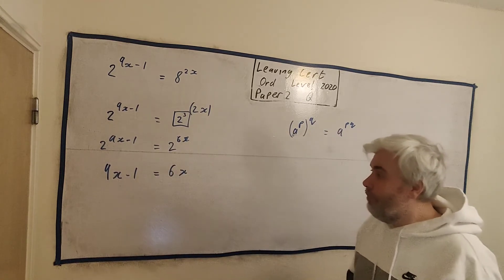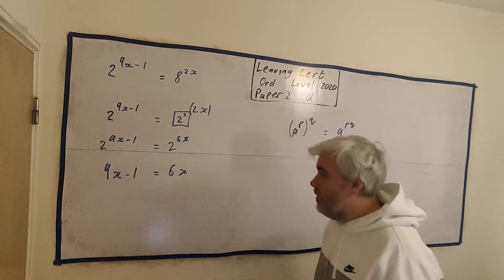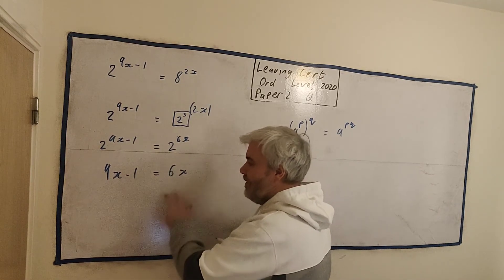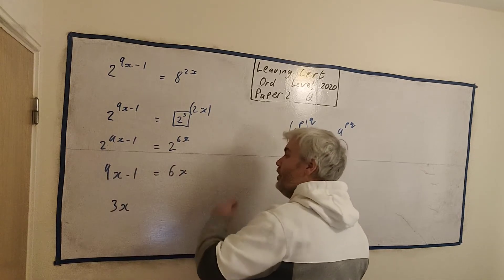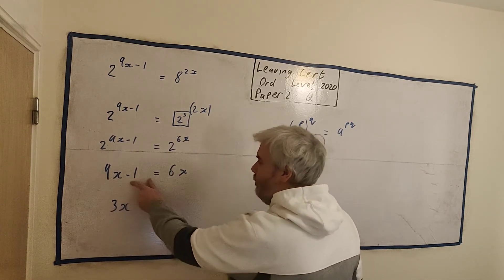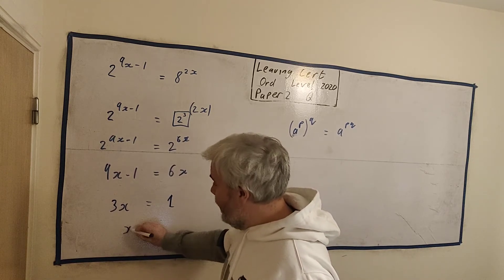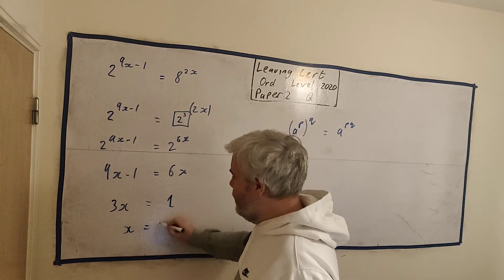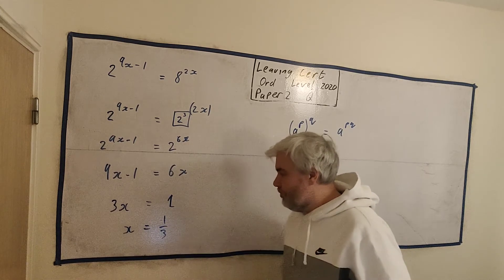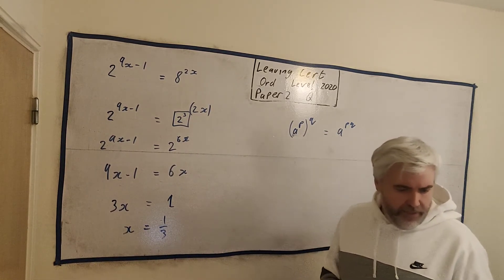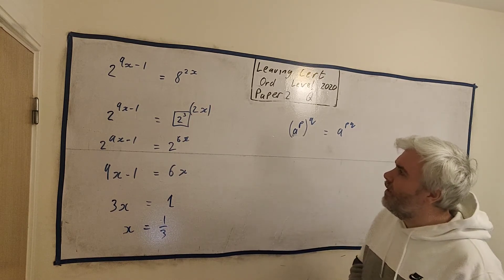We have quite a simple algebra question here. All the x's on the left, we'll get 9x minus 6x, 3x. All the numbers on the right, minus 1 becomes a plus 1. And we'll just then divide both sides by the 3. x is equal to 1 divided by 3. That's it. That's our answer.